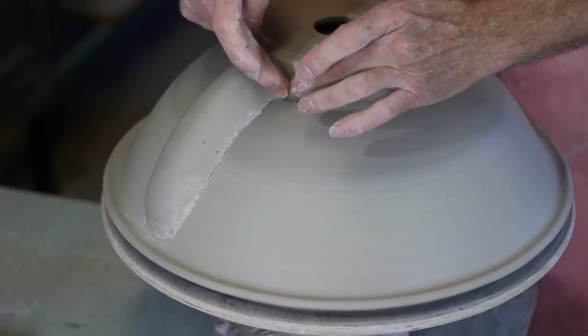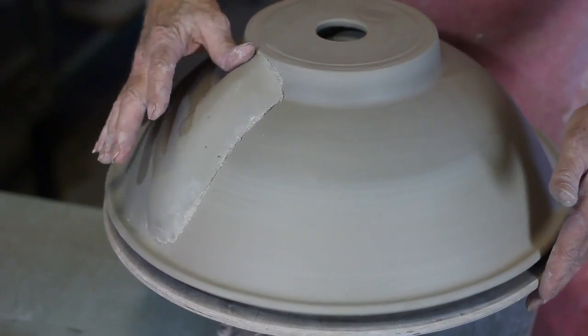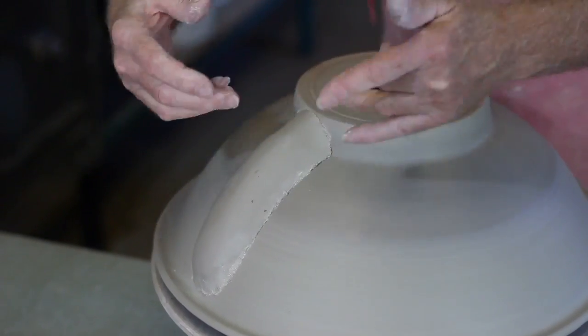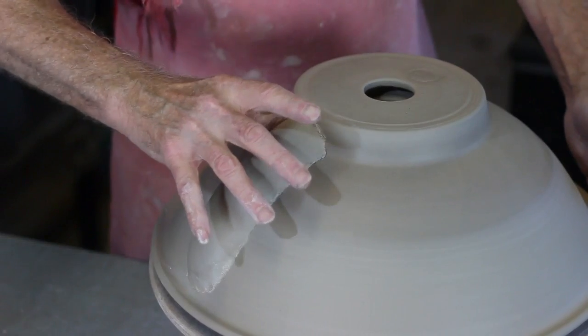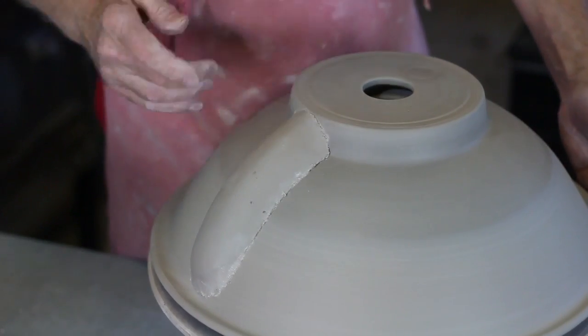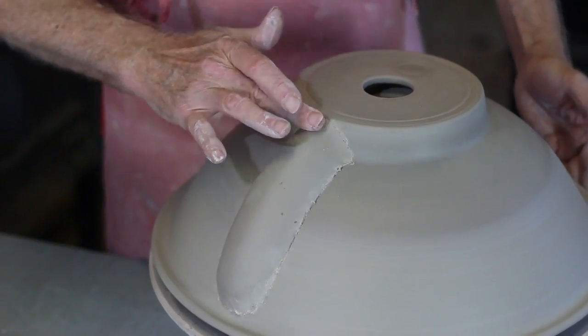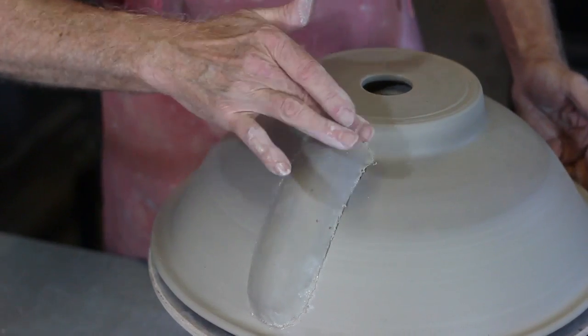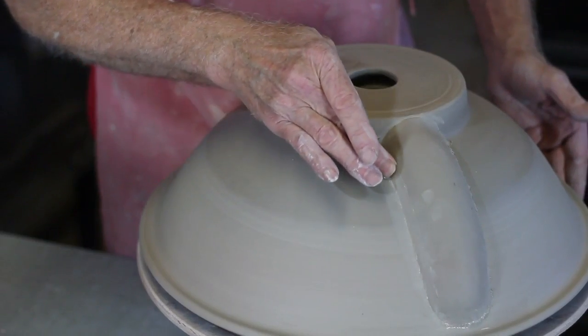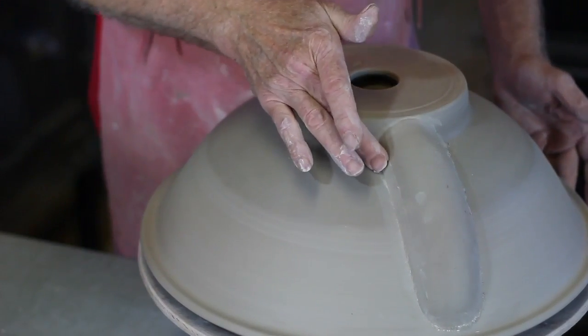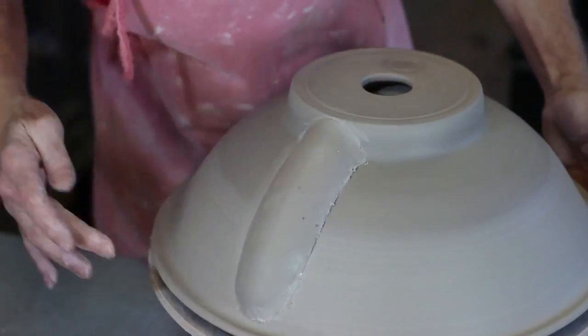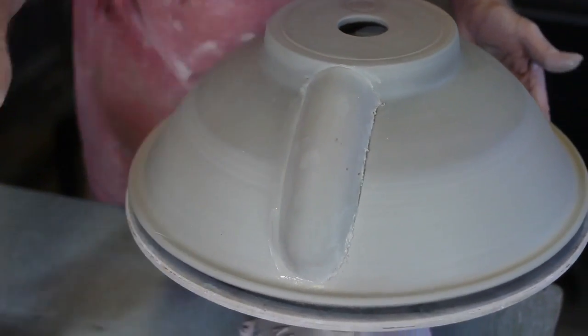Now the place that's most apt to crack is up here because you've got two forms going in different directions, and so the stress of drying is greater there. I run my finger across there and try to put this on so it's nice and neat.